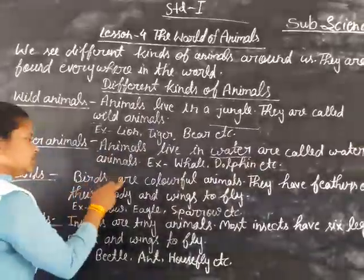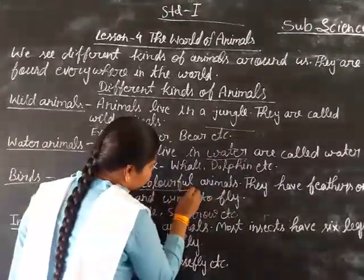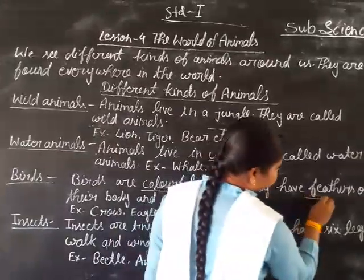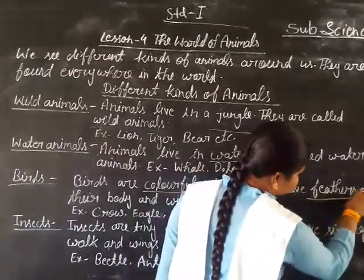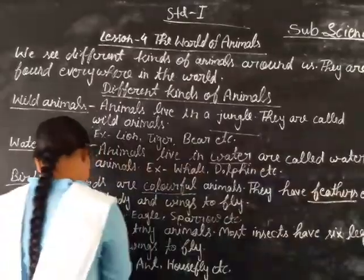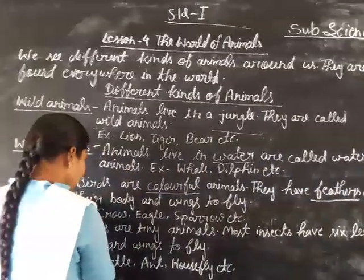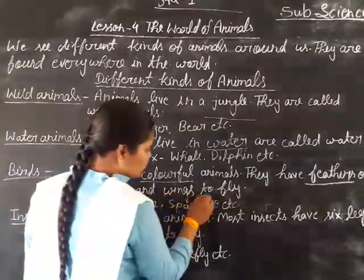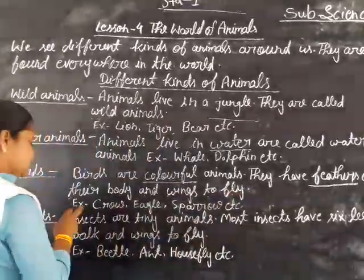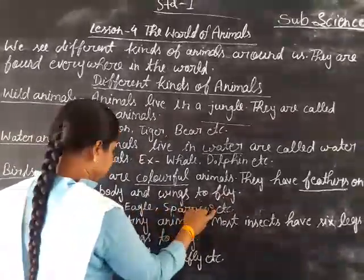Birds are colorful animals. They have feathers on their body and wings to fly. For example, crow, eagle, sparrow, etc.